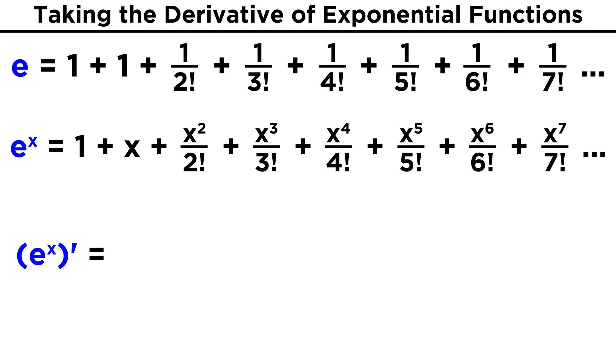Now let's see what happens when we take the derivative of this entire series, just using the simple power rule that we know. The derivative of one is zero, so that goes away. The derivative of X is one. The derivative of X squared is two X, and two factorial is two times one, so the twos cancel and we get X.